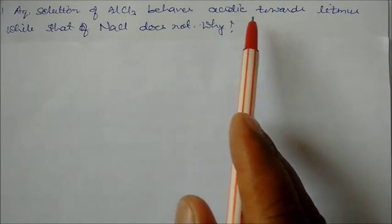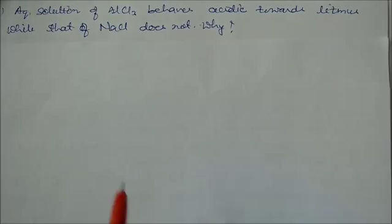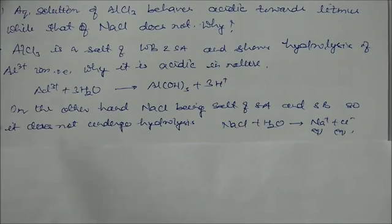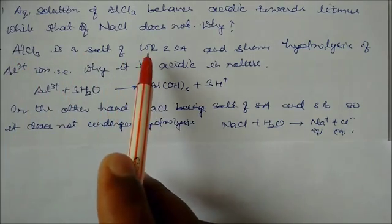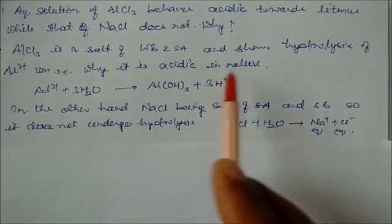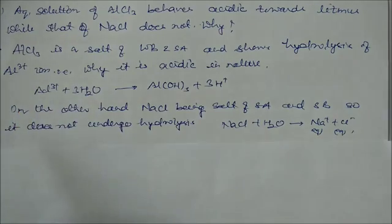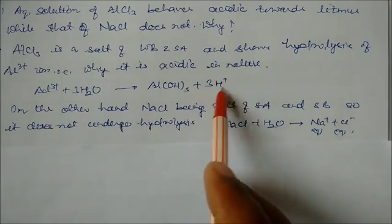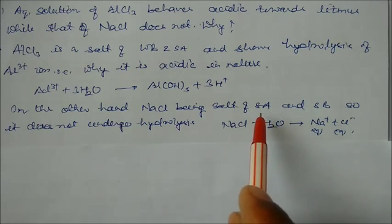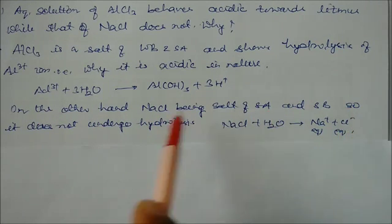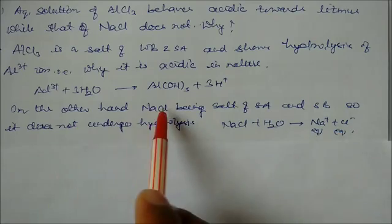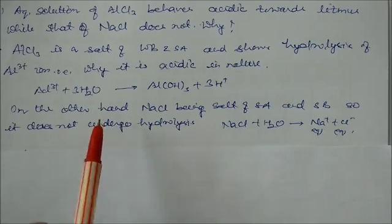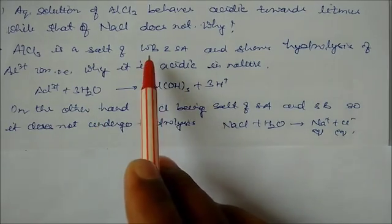Why does solution of AlCl3 behave acidic towards litmus while NaCl does not? AlCl3 is a salt of weak base and strong acid and undergoes hydrolysis of aluminum ions, that's why it is acidic in nature. On the other hand, NaCl is a salt of strong acid and strong base and does not undergo hydrolysis. NaCl will not undergo hydrolysis while AlCl3 will undergo hydrolysis, forming weak base and strong acid. Due to the strong acid, it shows acidic change.